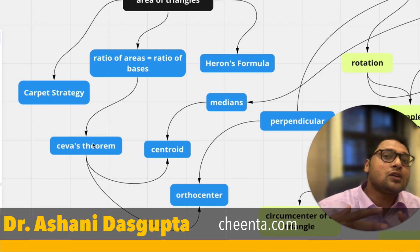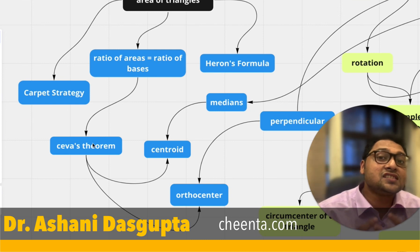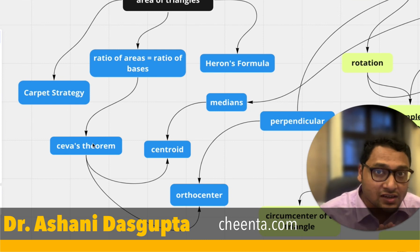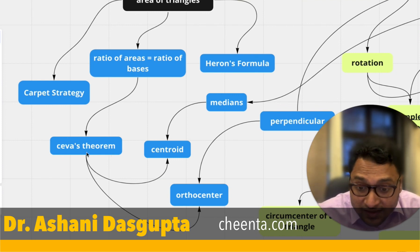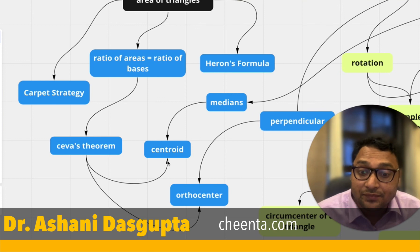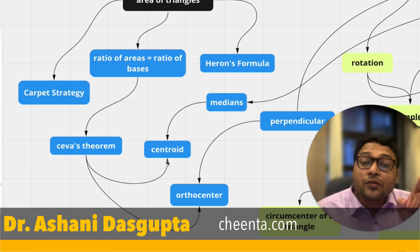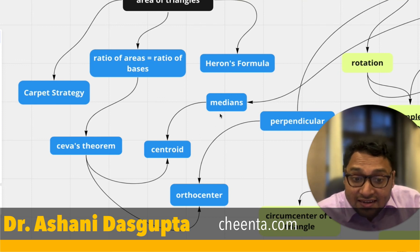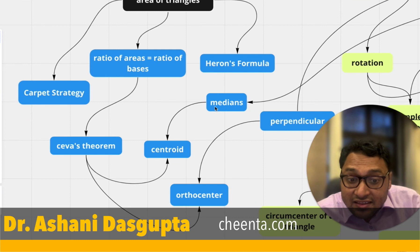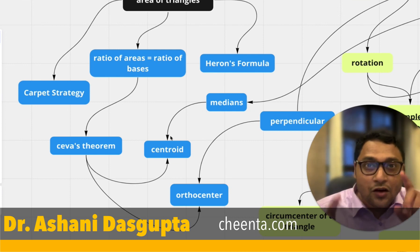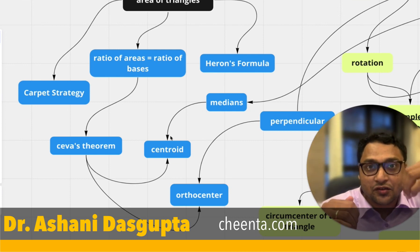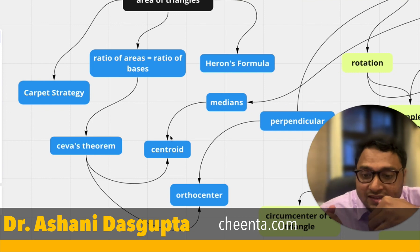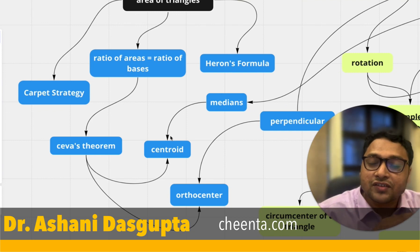This map gives you a way to study geometry efficiently. You study the top idea and then go to the bottom idea — that's how the flow of the hierarchy works. Once you study Ceva's theorem, see the arrow — it points towards centroid. There is another way to study centroid: after studying the medians. So you have two paths going up to centroid, one coming from medians and one from Ceva's theorem.